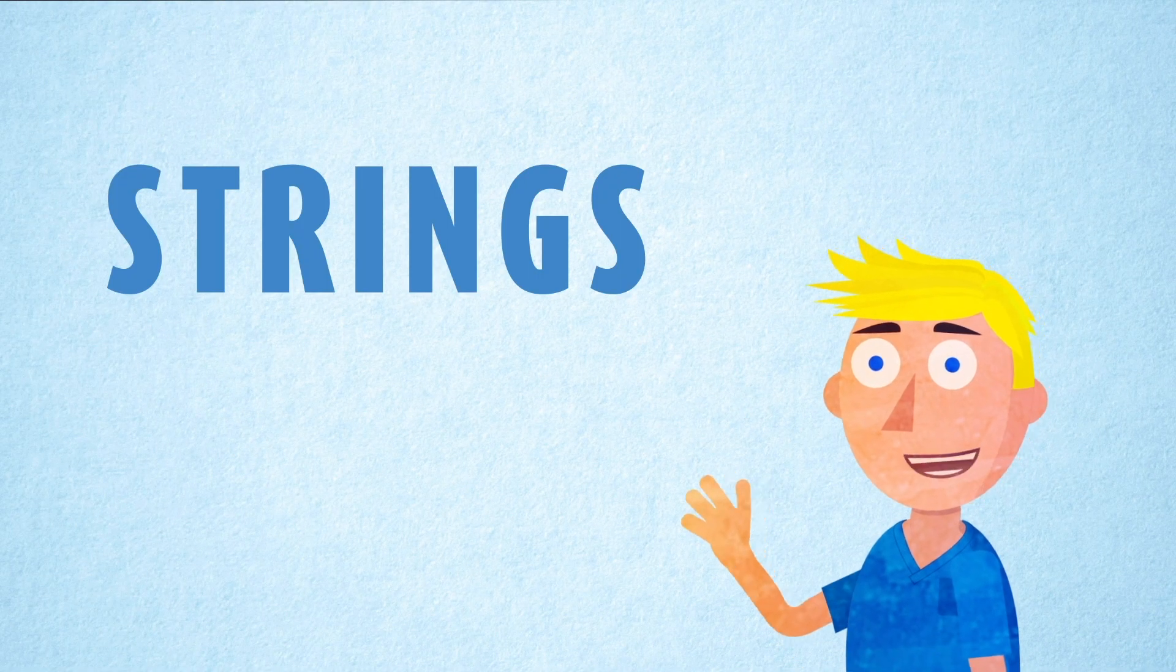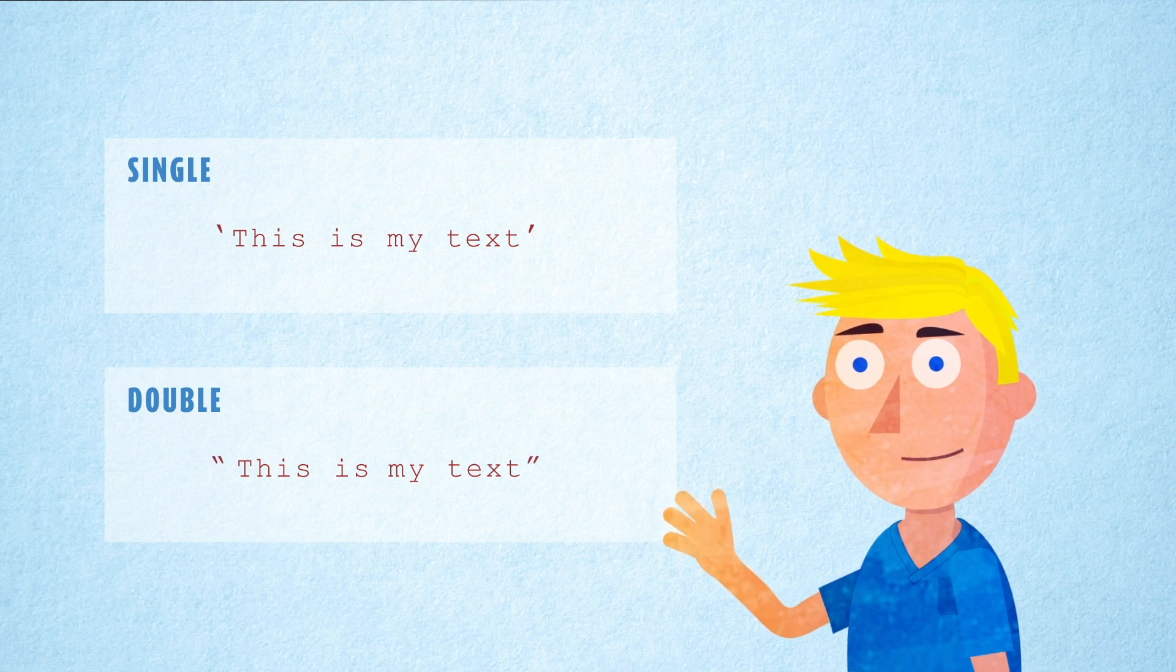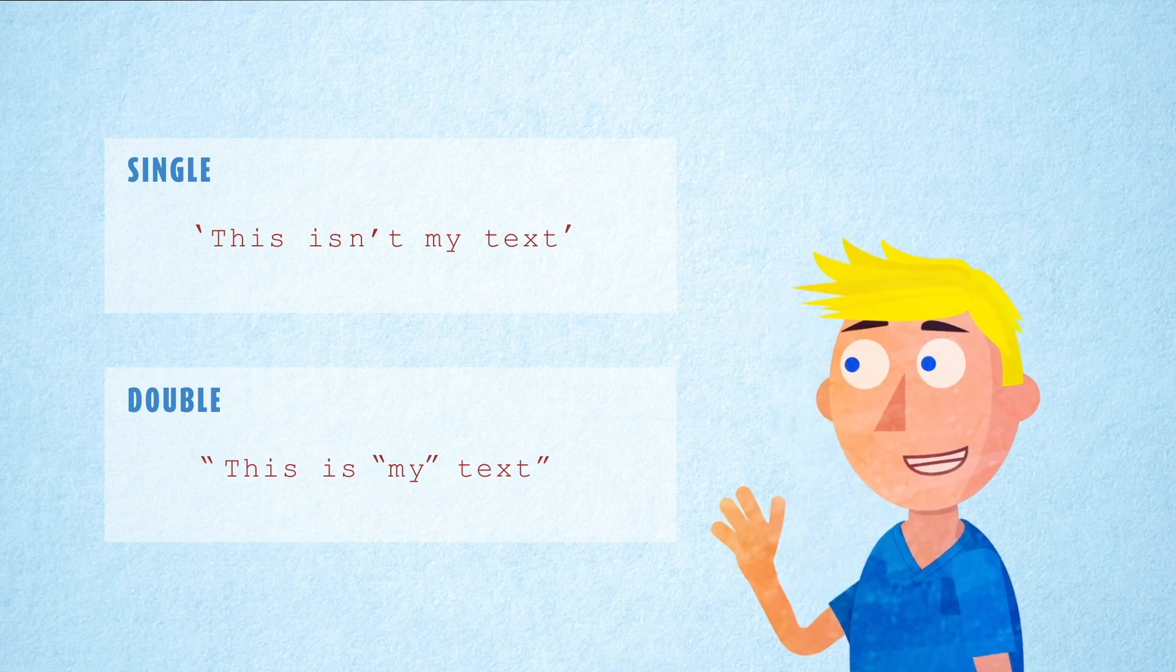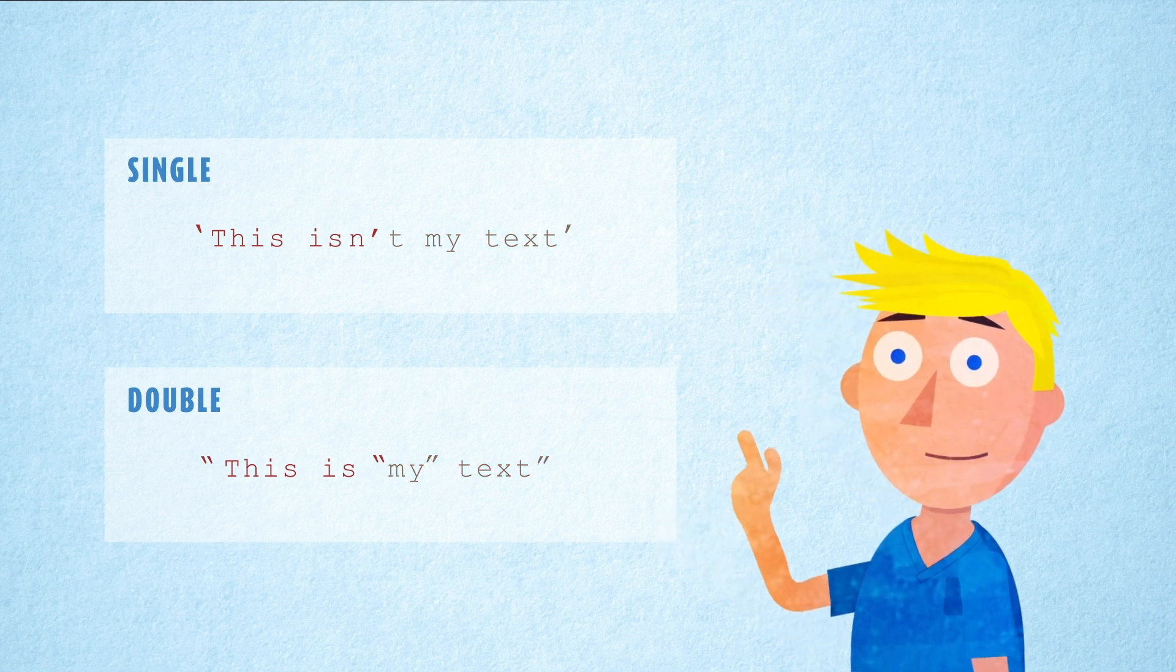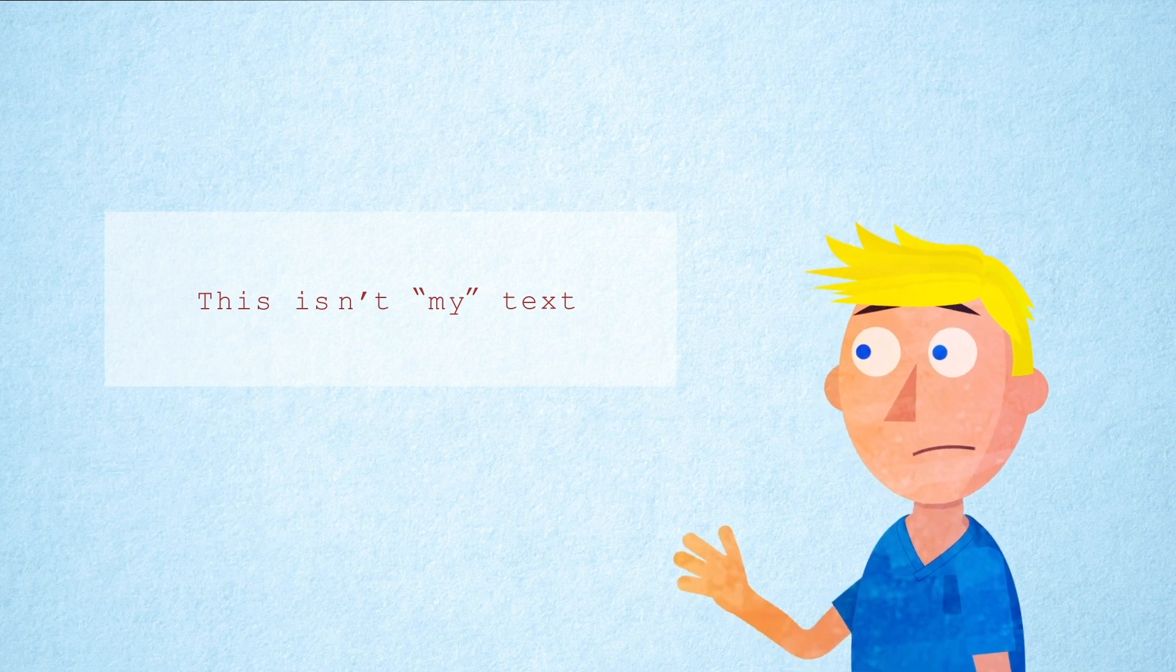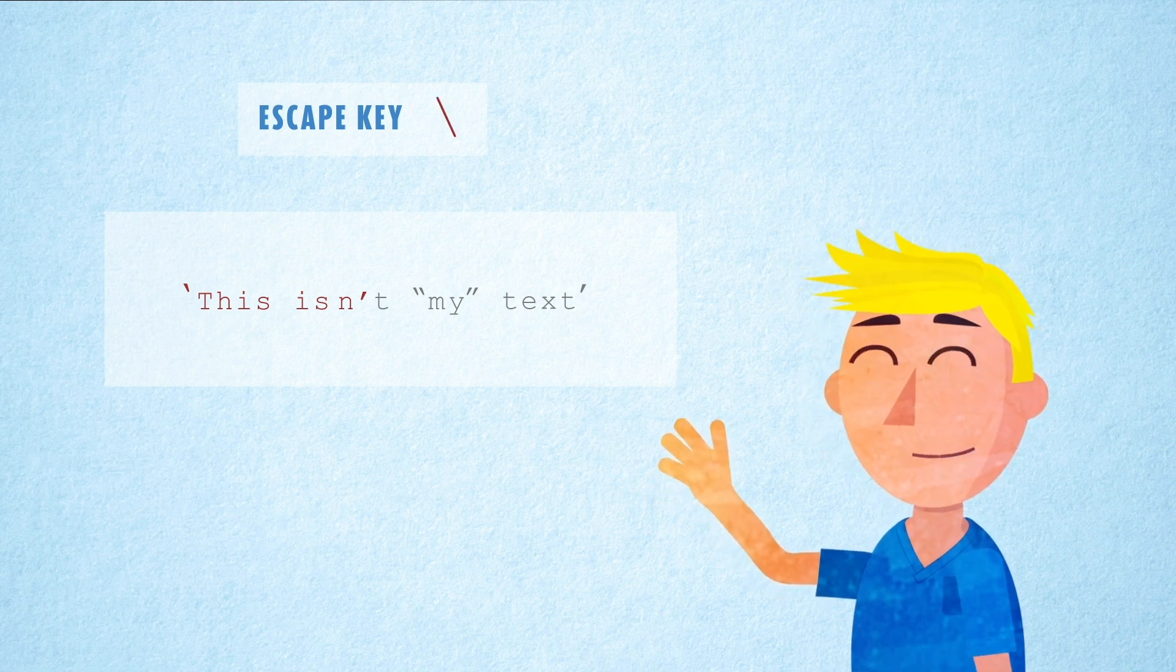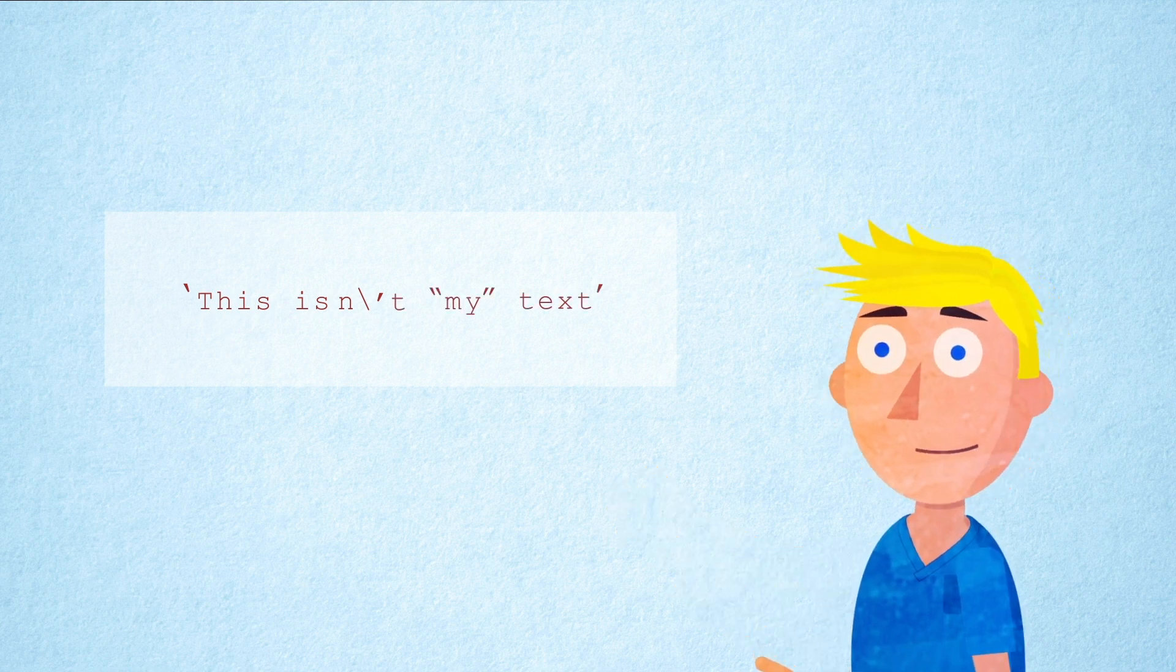We've touched on strings when discussing types but we need to cover them in a bit more detail. A string is defined using single or double quotation marks otherwise python can't recognize the text as a string. Strings are the only way of storing text data so you'll be using them a lot. However you might already have spotted a problem with declaring strings. What if we want to have an apostrophe or quotation mark in our string? We can get around this by using something called an escape key. The escape key is a backslash and by placing it in front of our apostrophe we are telling python to ignore the apostrophe in the string and therefore not terminate the string early. Let's try this in our notebook.